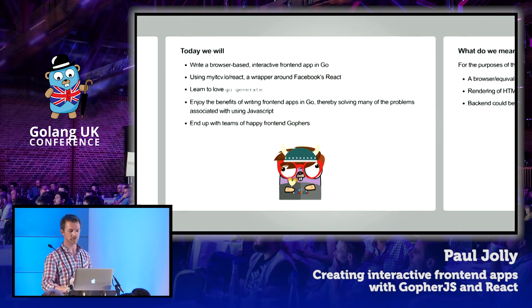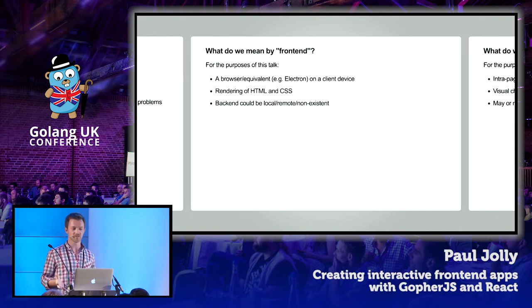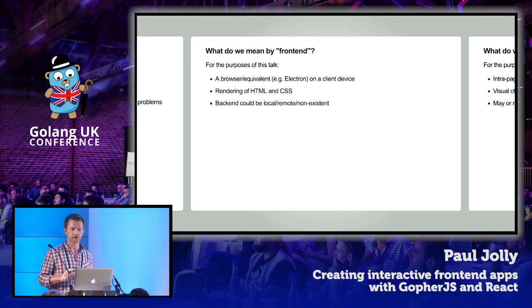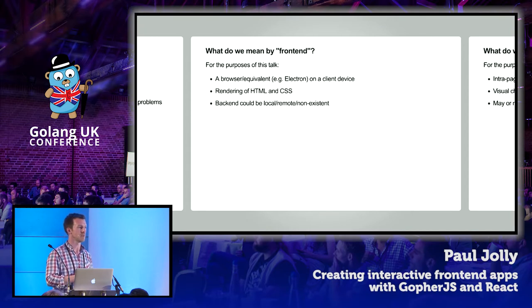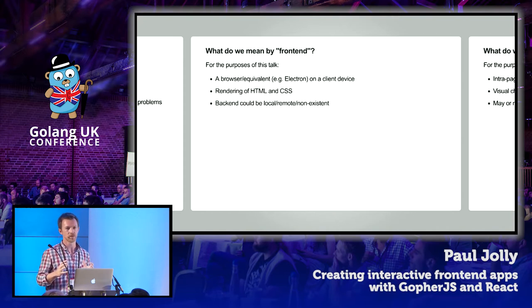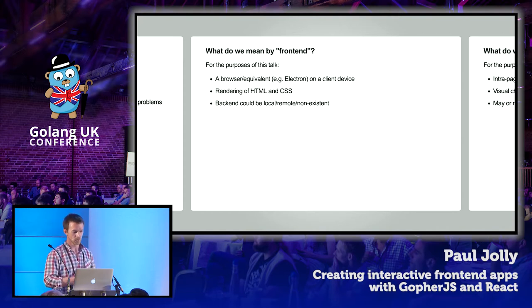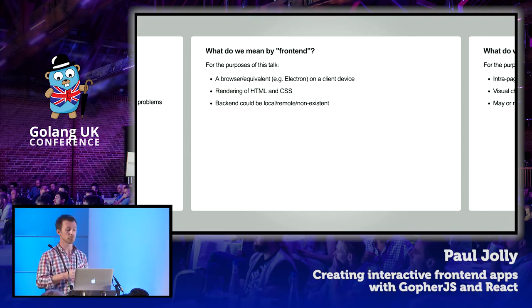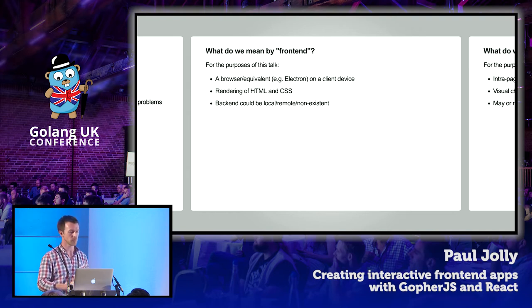Let's just quickly start with some definitions. For the purposes of this talk, what do I mean by front-end? I mean a browser or equivalent on a client device which is rendering HTML and CSS. That includes, by definition, something like GitHub's Electron, which is effectively a wrapper around a browser, or the V8 engine at least. The back-end could be local, remote, or non-existent. We'll focus on the front-end part, the bit that runs within the browser.